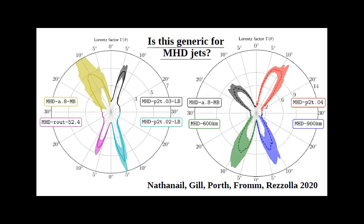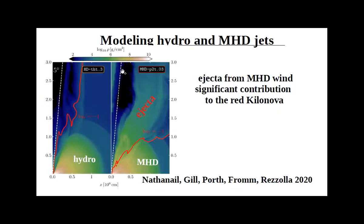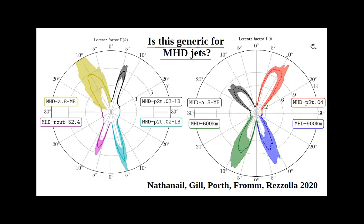To test if hollow-cone MHD jets are generic, polar plots spanning 0–30 degrees from the axis are shown for eight different models. In all of them, the Lorentz factor peaks at five degrees or more — sometimes up to 10 degrees or larger — and all MHD models exhibit a hollow cone in the middle.